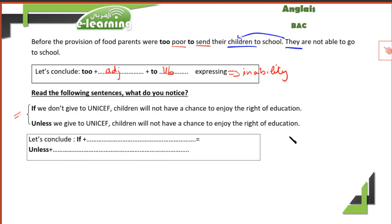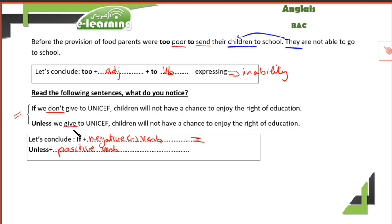What do you notice? First one: 'if' plus a negative verb equals the same meaning as 'unless' plus a positive verb. Both have the same meanings. Also, 'if' and 'unless' can take the initial position — meaning at the beginning of the sentence — or in the middle of the sentence. You focus only on that clause, and the other clause remains the same.